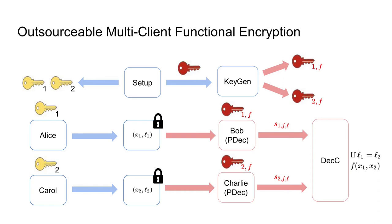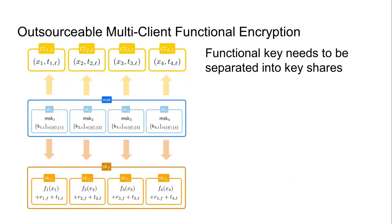More formally, in an outsourcable multi-client functional encryption scheme, the key generation procedure outputs different functional key shares for function f. These shares can be used by parties Bob and Charlie to execute the partial decryption procedure and obtain different decryption shares. Bob, in possession of the first part of the functional key, only needs to execute partial decryption on the first ciphertext; the same holds for Charlie with respect to the second ciphertext. The resulting decryption shares are combined to obtain the final output. Security ensures that if not all shares are known, nothing about the function evaluation is leaked.